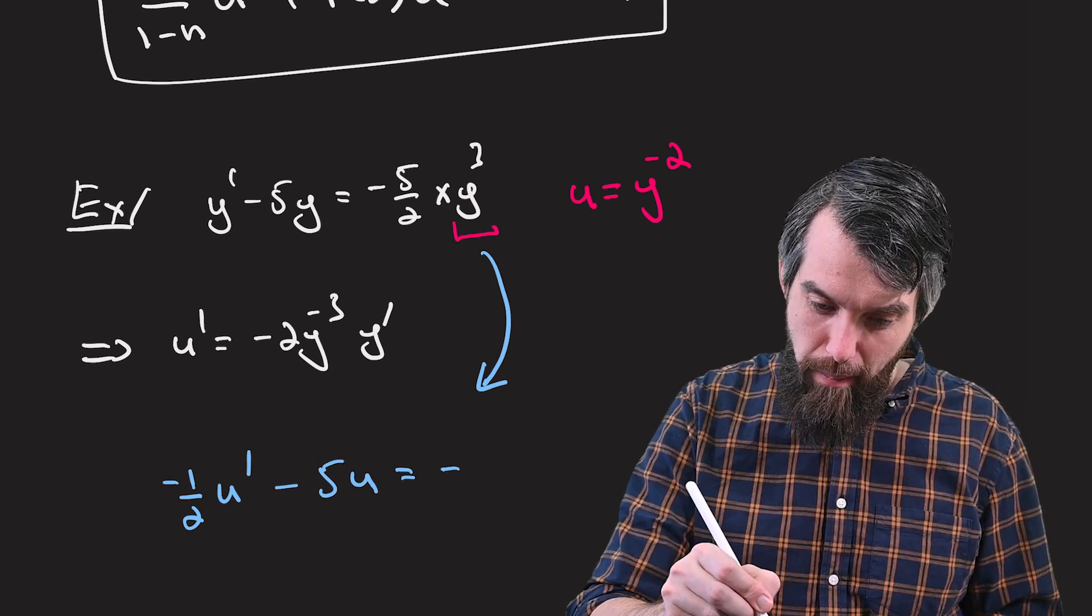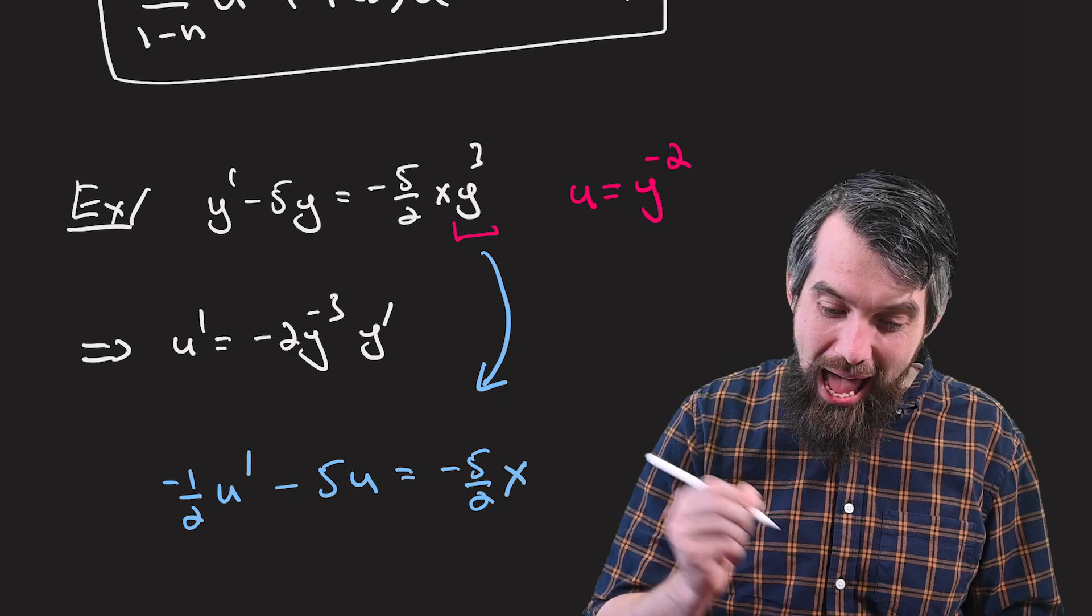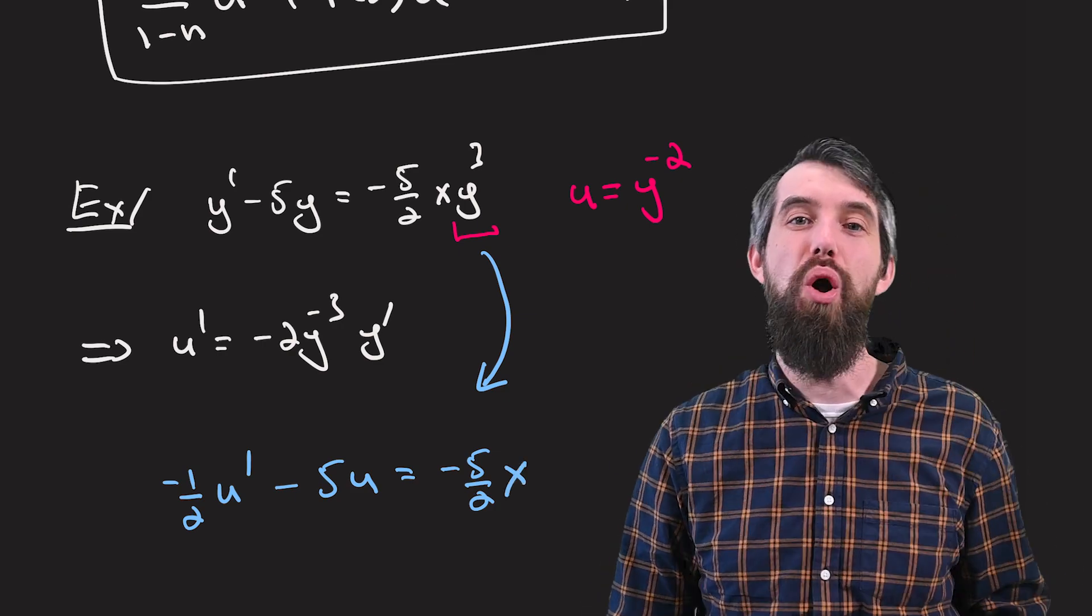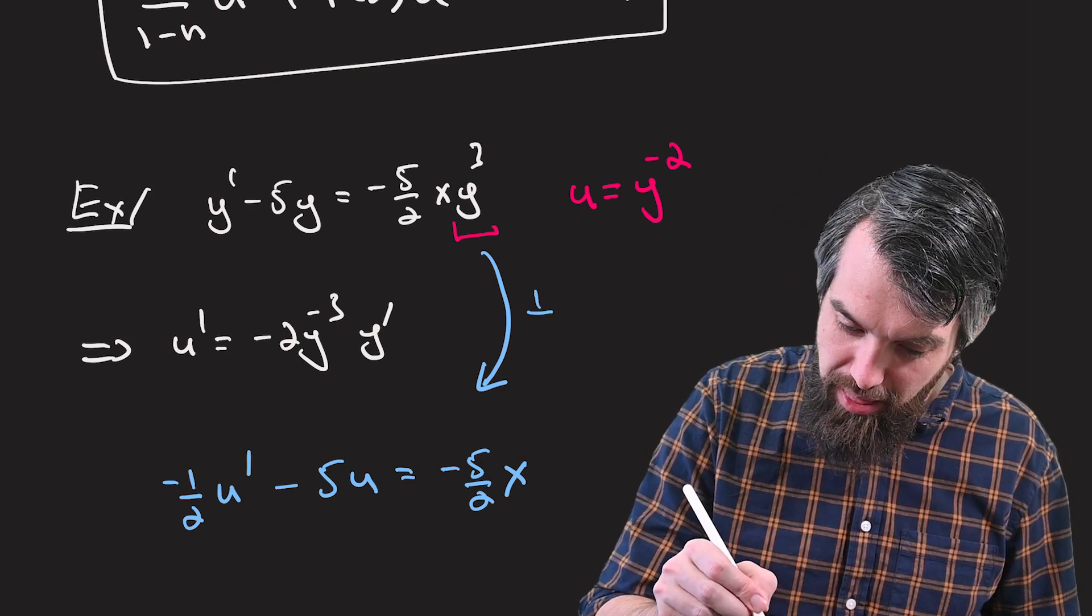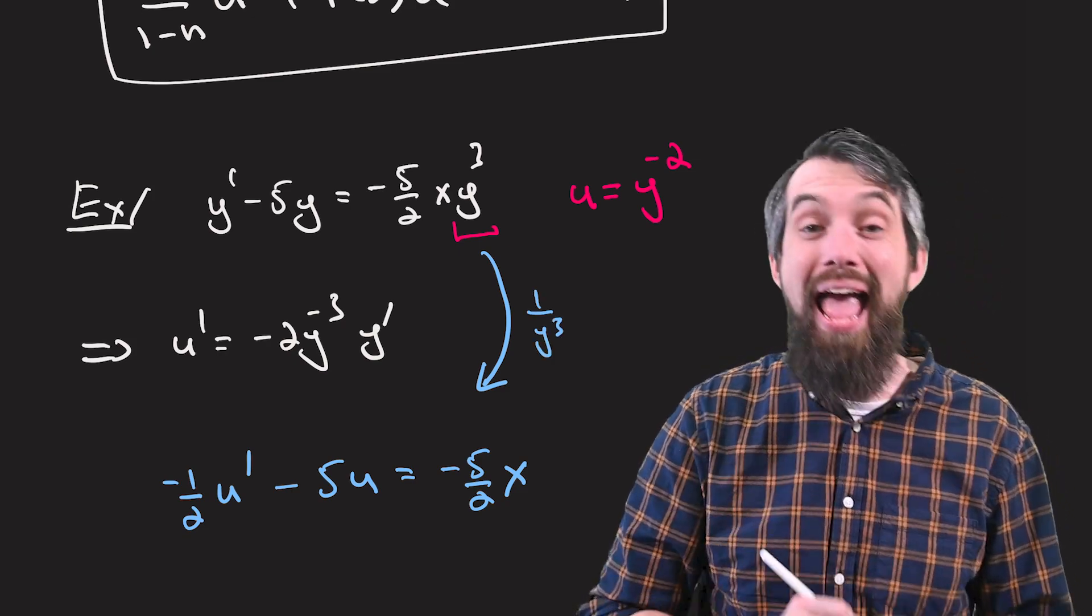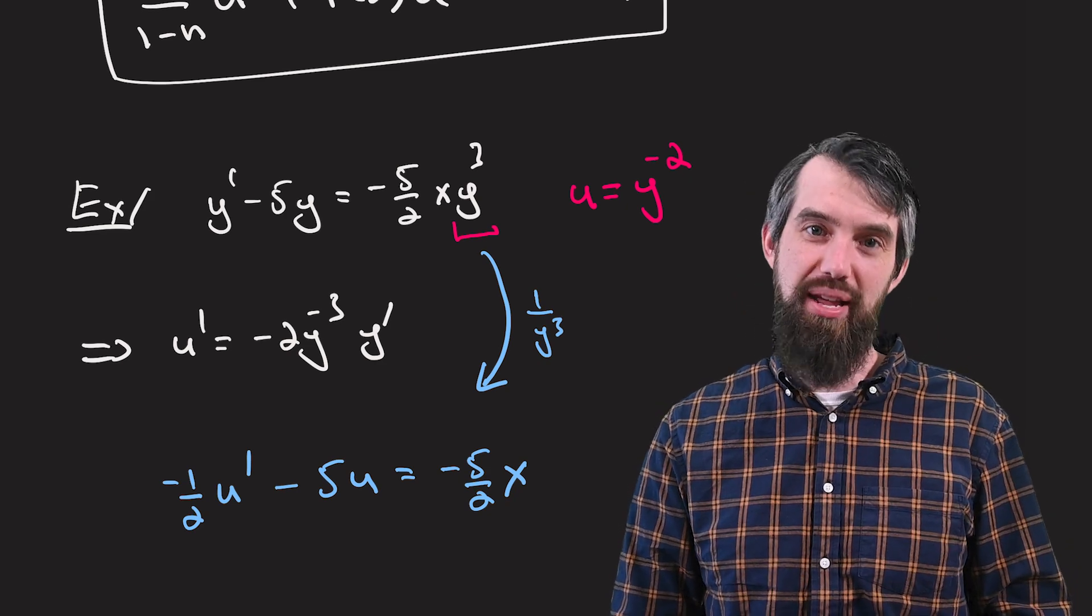And then this is going to be equal to minus 5 halves times x. And now there's no longer a y cubed. I've divided the entire equation by y cubed. Maybe I'll put that in explicitly, that I was doing a 1 over y cubed and changing to u's when I did this.